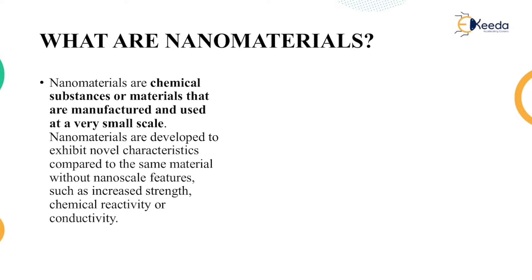Nanomaterials are chemical substances or materials that are manufactured and used at a very small scale. They are developed to exhibit novel characteristics compared to bulk materials without nanoscale features, such as increased strength, chemical reactivity, and conductivity. Because of these properties, nanomaterials have varied applications and varied uses.